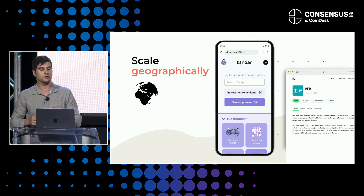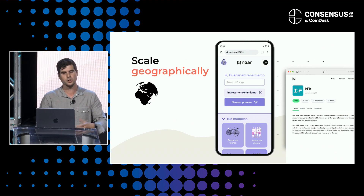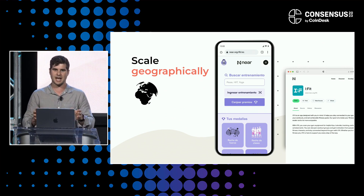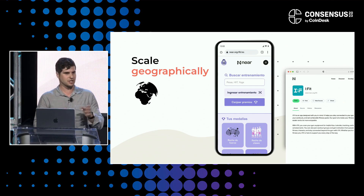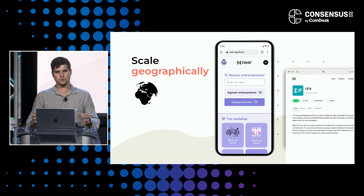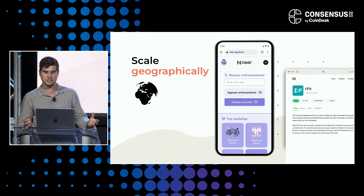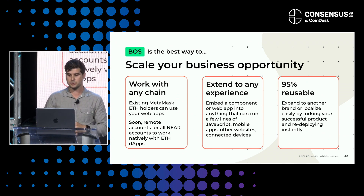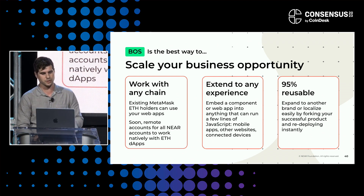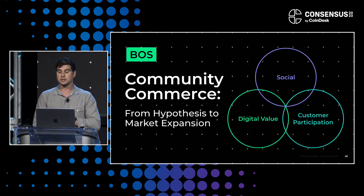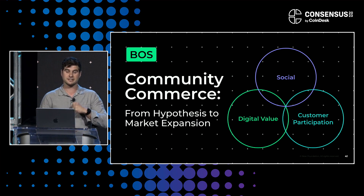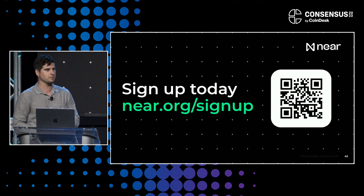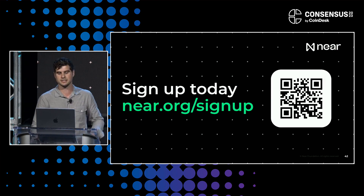You can also scale geographically — in this example, we've changed the visual design to purple, it's now in Spanish, and it's being relaunched for Spain. All you had to do was click Fork from your existing app, and in a few minutes change the HTML and CSS. Now you have a specific community just for Spanish-speaking gym-goers and fitness aficionados. You can scale your businesses — it works with any chain, extends to any experience that can run JavaScript, and it's 95% reusable. This is community commerce from hypothesis to market expansion on the Boss. Sign up today at near.org/signup, and use FastAuth if you scan the QR code.